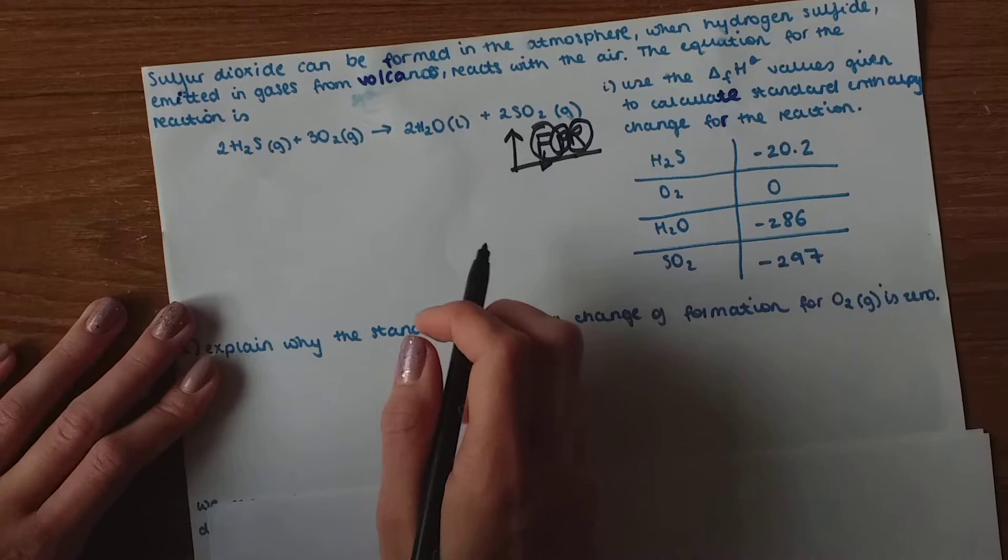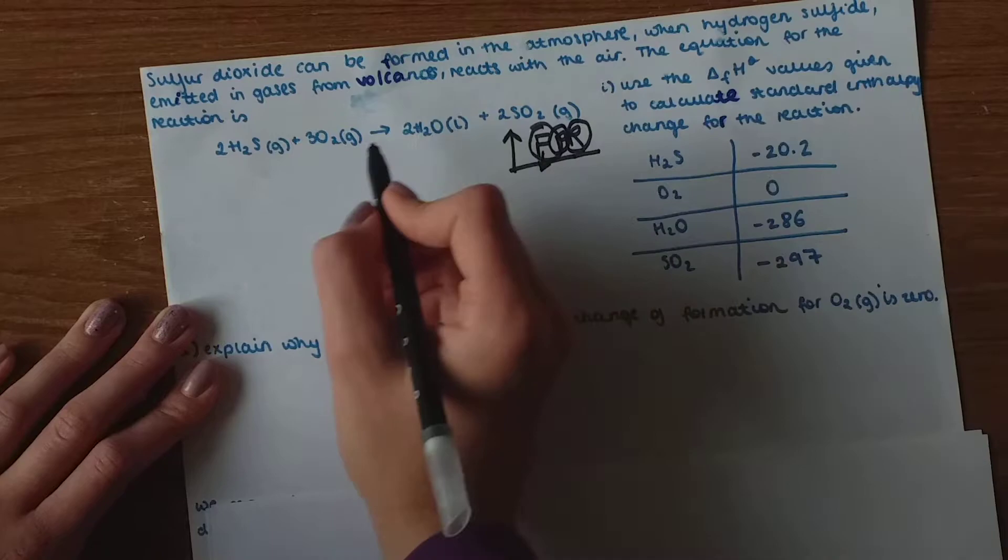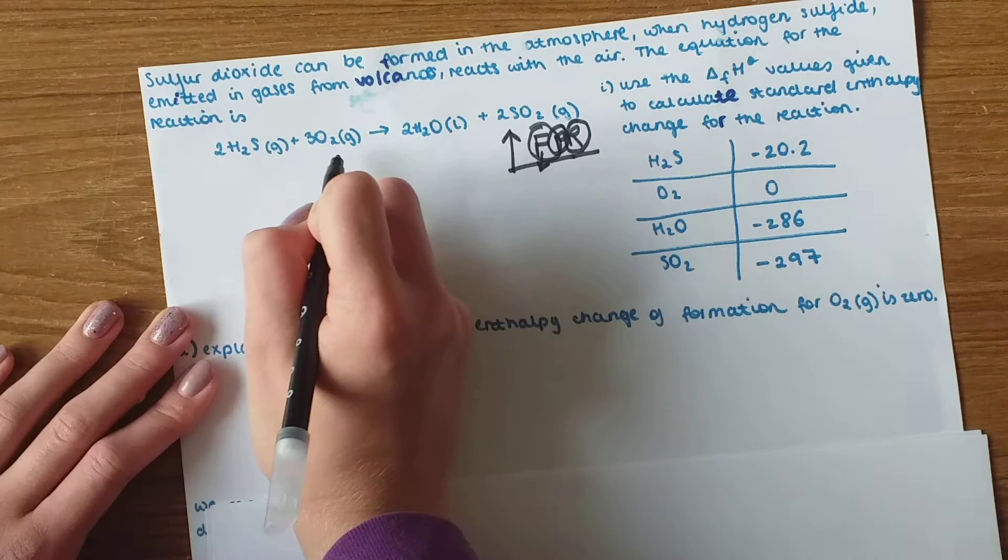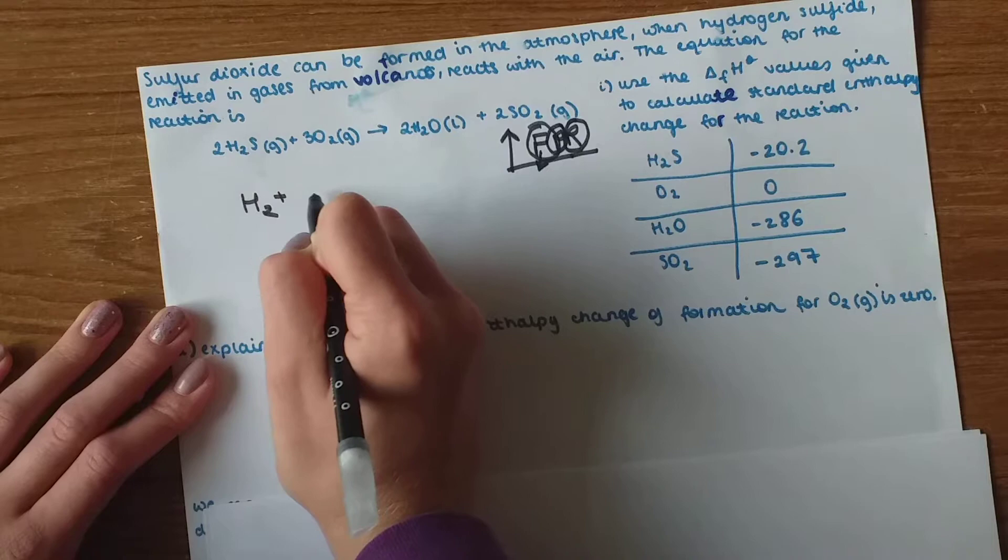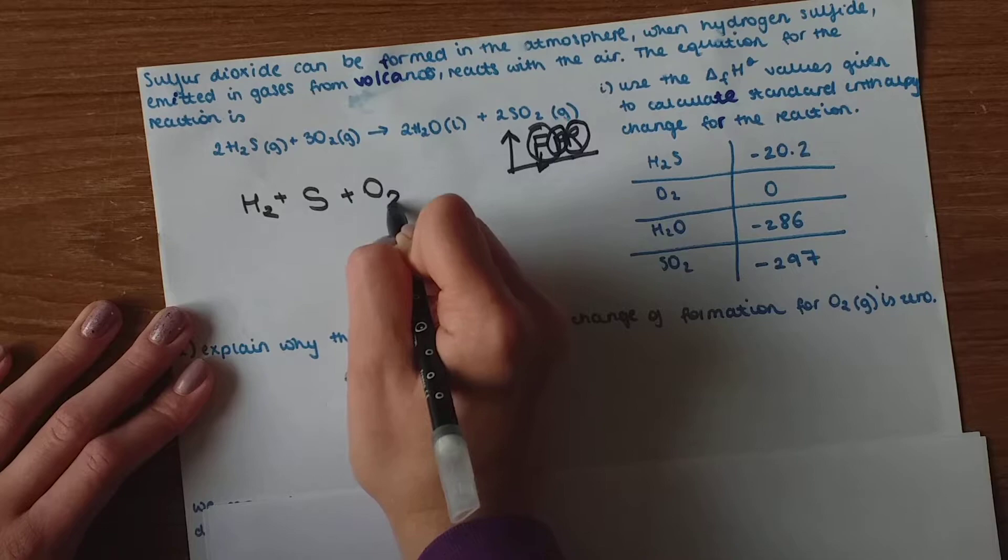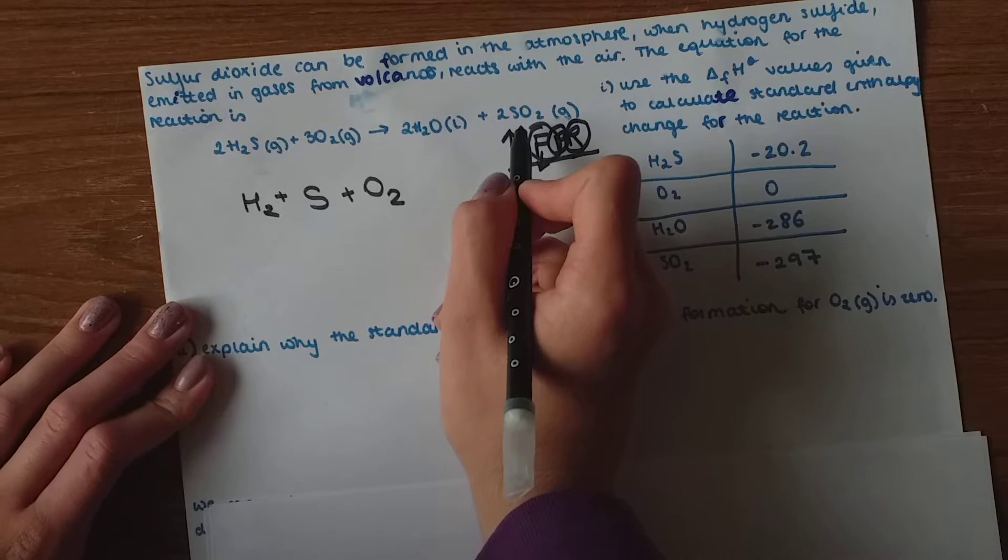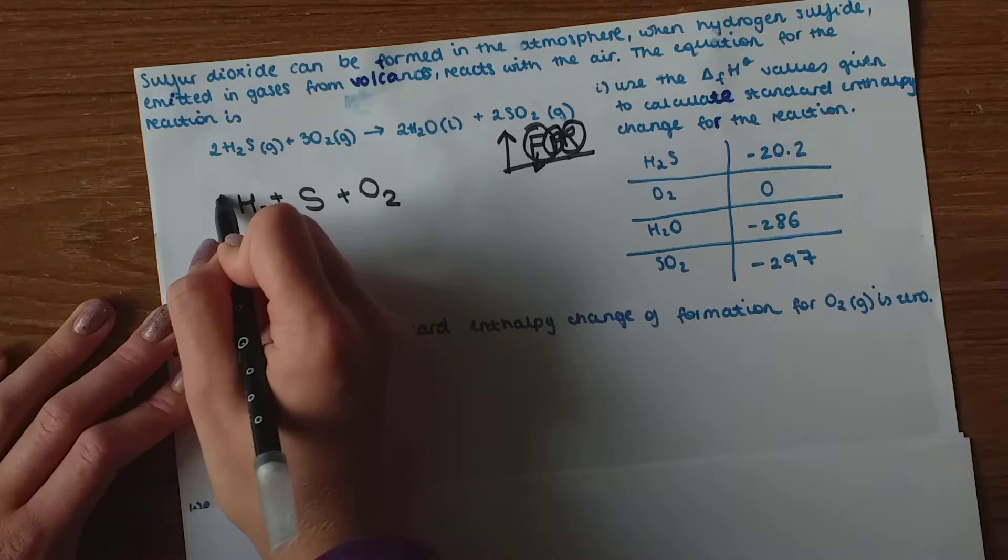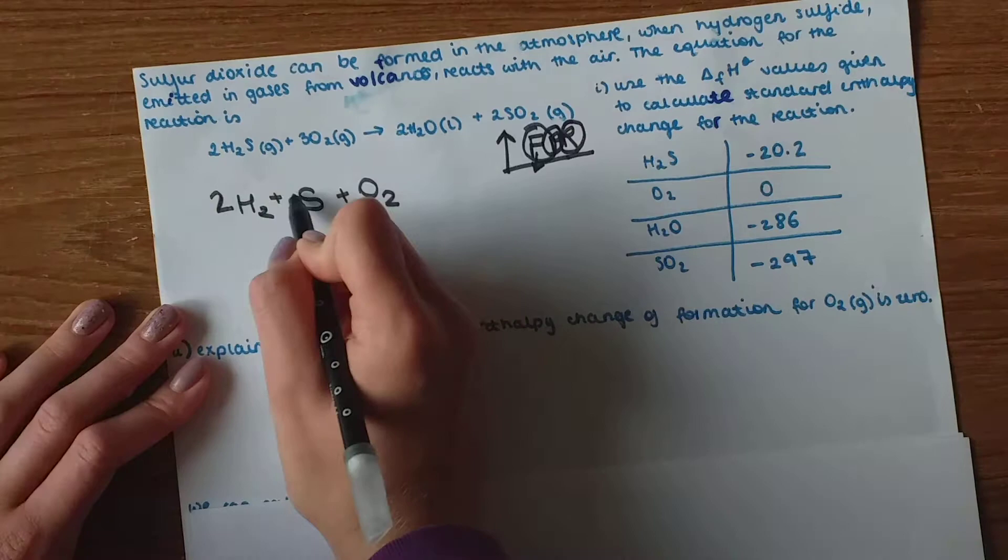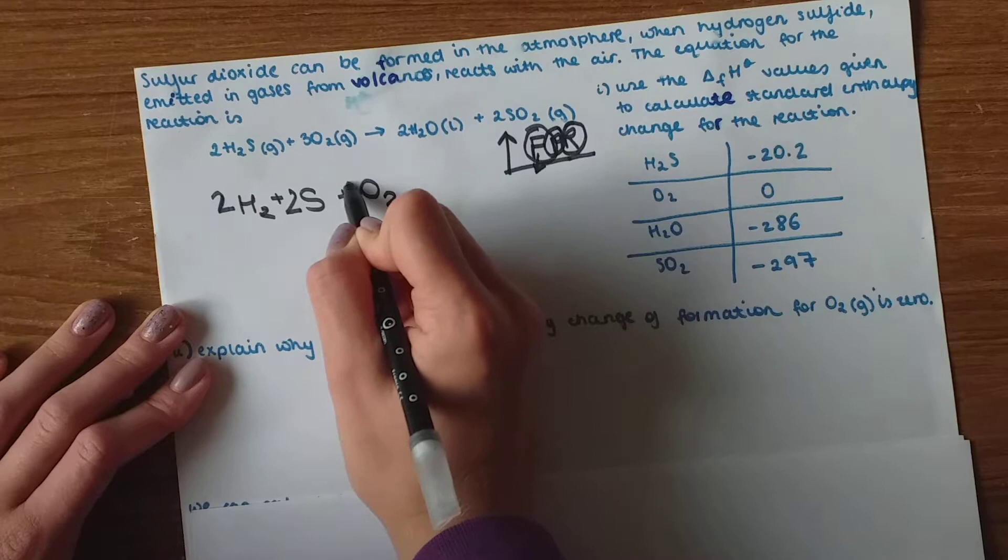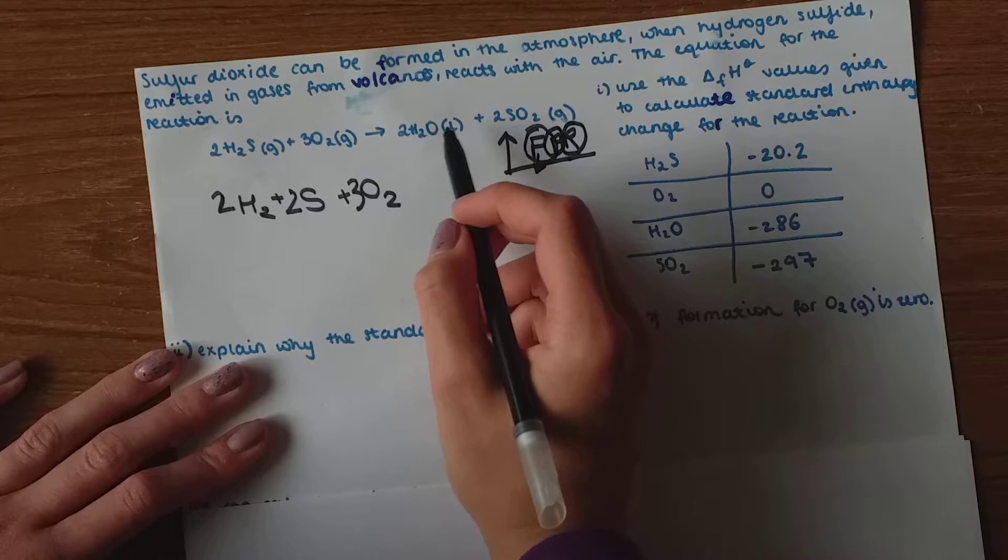So these are the formation values and the elements needed to form these two substances are hydrogen which goes in pairs plus sulfur and oxygen. These are also the elements that form these substances. Now we just got to balance it out. So we need four hydrogens so two in front of this. We need two sulfurs so two in front of sulfur and we need six oxygens so three in front of oxygen.